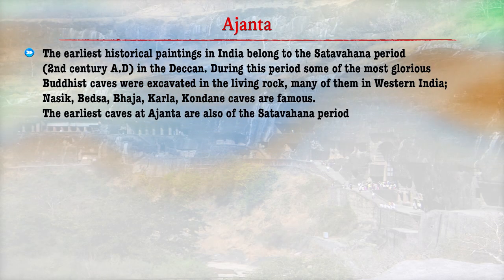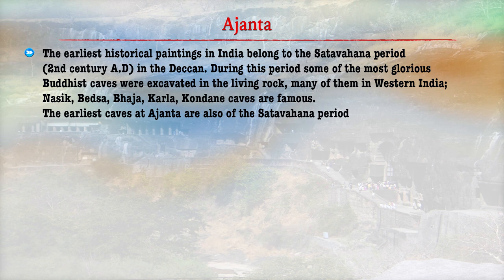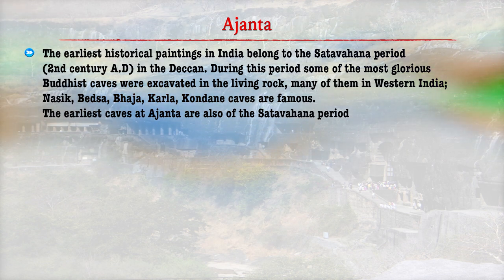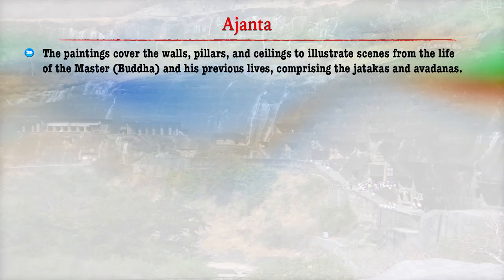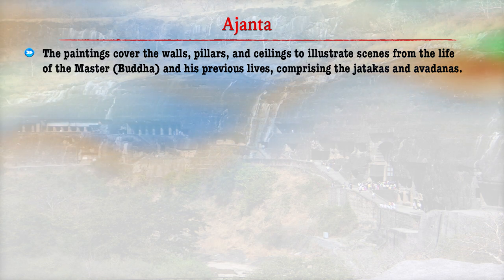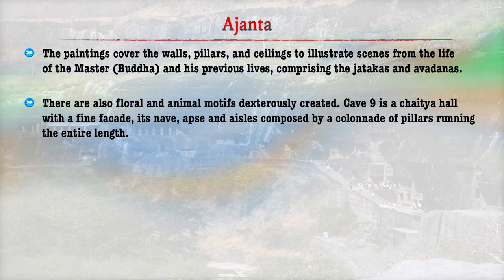The earliest historical paintings in India belong to the Satvahana period in Deccan. During this period, some of the most glorious Buddhist caves were excavated in the living rocks, mainly in Western India, at places such as Nasik, Bhaja and Karla. The earliest caves at Ajanta also belong to the Satvahana period. The paintings are concentrated in caves number 9 and 10, covering the walls, pillars and ceilings to illustrate scenes from the life of Buddha, his previous life comprising the Jatakas and his followers. There are also floral and animal motifs created by the painters.